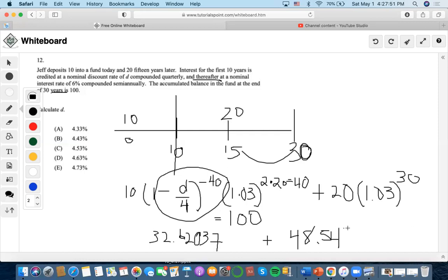This whole thing equals 100, so we move this to the other side. 100 minus this would be 51.45475. We divide that value by 32.62037 and get 1.57738.